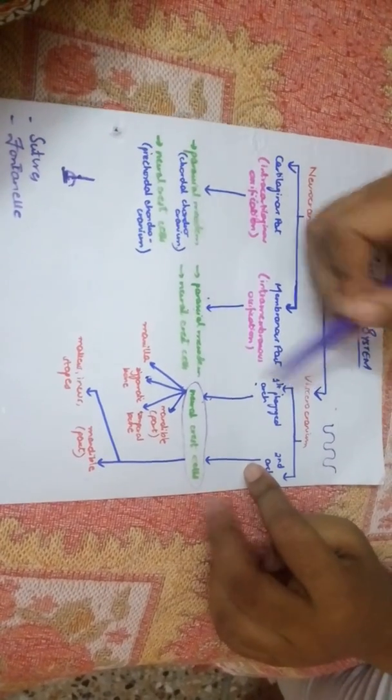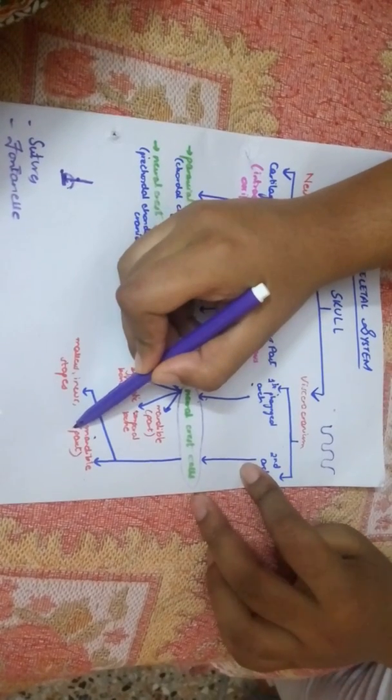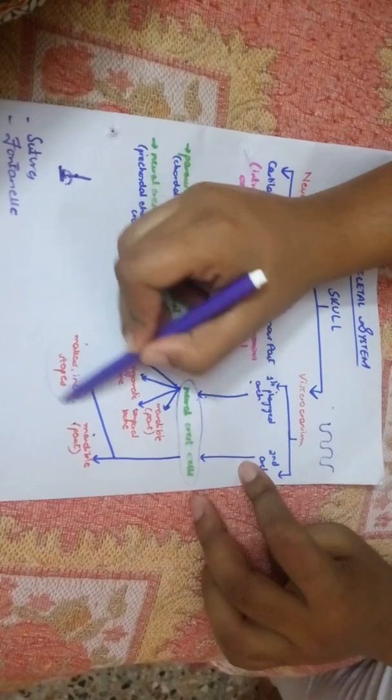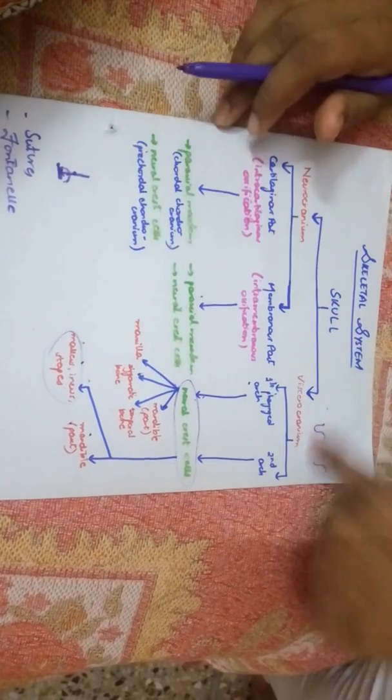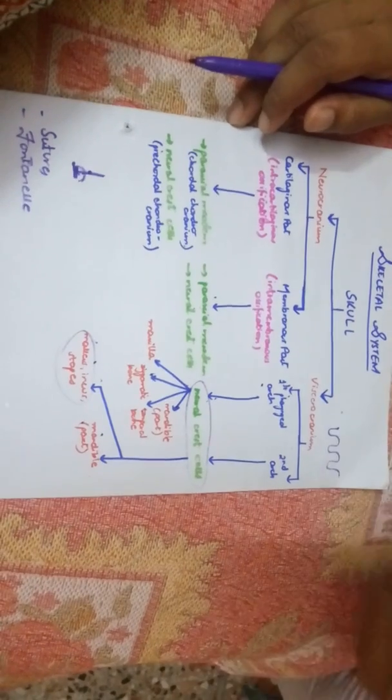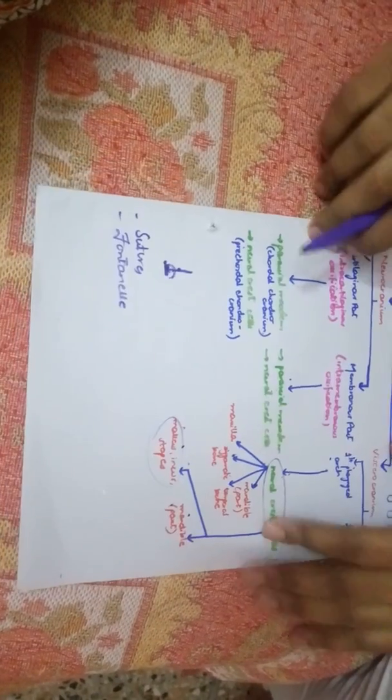The remaining parts form from the second pharyngeal arch. The mandible or lower jaw's dorsal part forms from it, and the three bones of the ear—malleus, incus, and stapes—form from the second pharyngeal arch. This completes our viscerocranium. Please repeat and listen to this once again because it's very important.